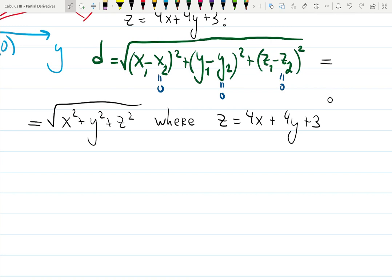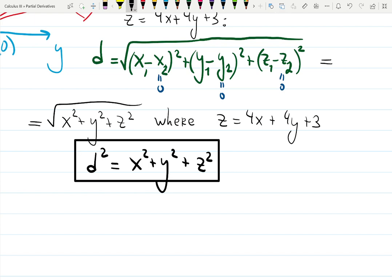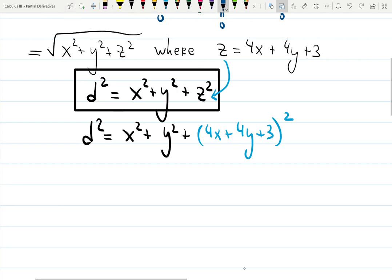Let's square D. That's a typical idea to get rid of the square root. Squaring D, the square root cancels and we have x squared plus y squared plus z squared. But z is given: z is 4x plus 4y plus 3. So D squared is actually x squared plus y squared plus (4x plus 4y plus 3) squared.